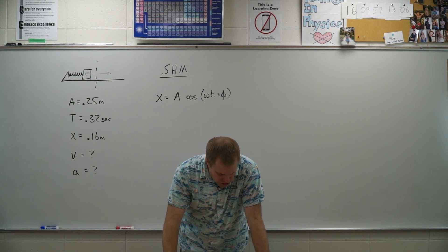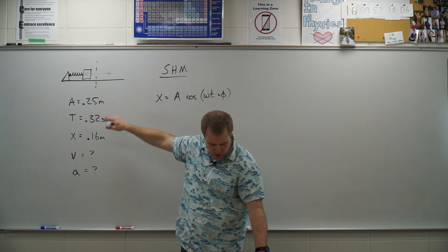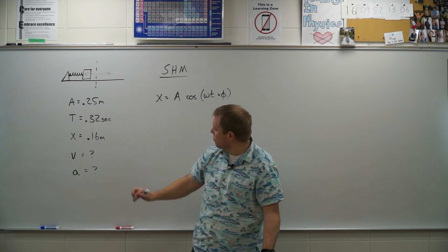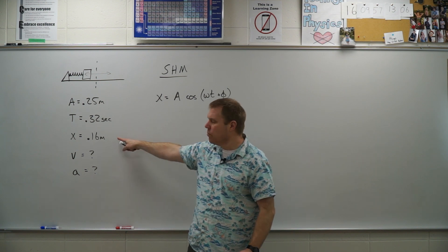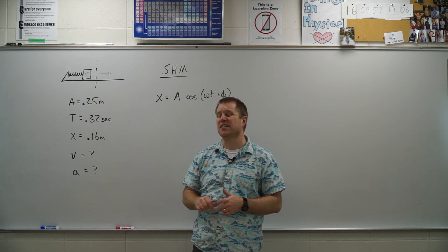The amplitude of the motion is 0.25 meters, and the period is 3.2 seconds, and they want me to find the speed and the acceleration when the position is 0.16 meters.